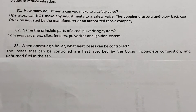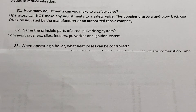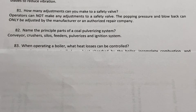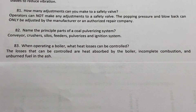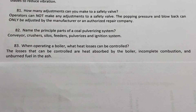When operating a boiler, what heat losses can be controlled? The losses that can be controlled are: heat absorbed by the boiler, incomplete combustion, and unburned fuel in ash.